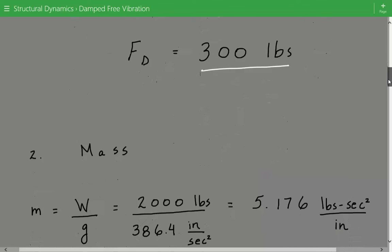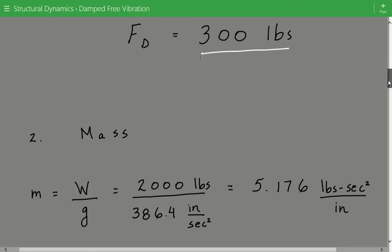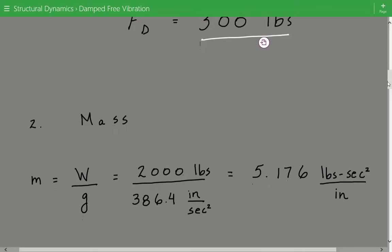Next we need to calculate the mass and that's equal to the weight divided by the gravitational acceleration. So that's going to be equal to 2,000 pounds divided by 386.4 inches per second squared. So the mass is equal to 5.176 pounds second squared per inch.